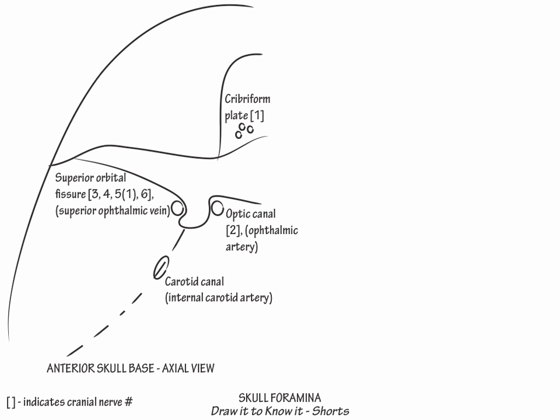Next, posterior to the superior orbital fissure, within the greater wing of the sphenoid bone, from anterior to posterior, label foramen rotundum, foramen ovale, and foramen spinosum.